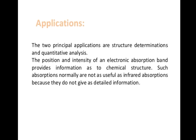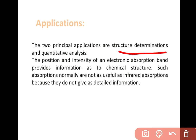Applications of electronic transitions: The two principal applications are structure determination and qualitative/quantitative analysis. The position and intensity of an electronic absorption band provides information about the chemical structure. However, such absorptions are normally not as useful as infrared absorption because they do not give as detailed information.